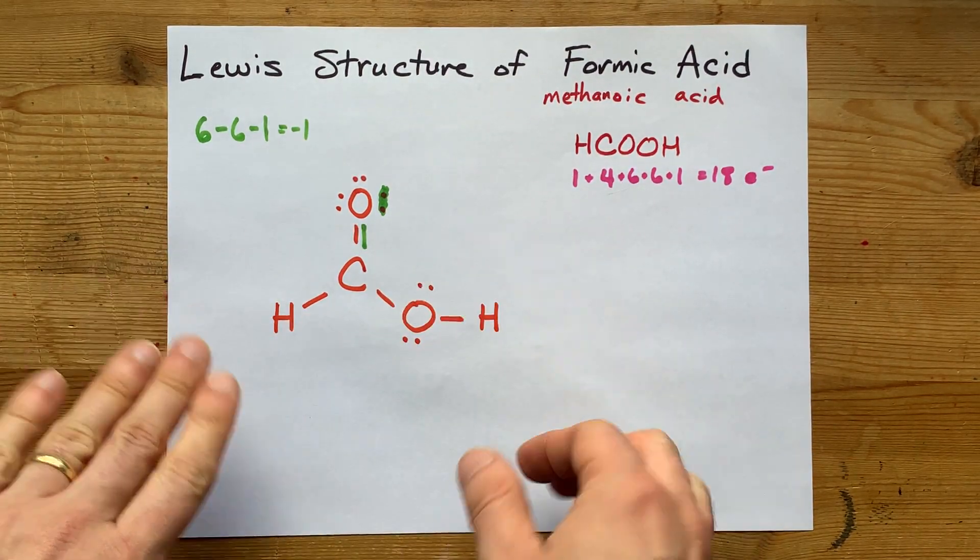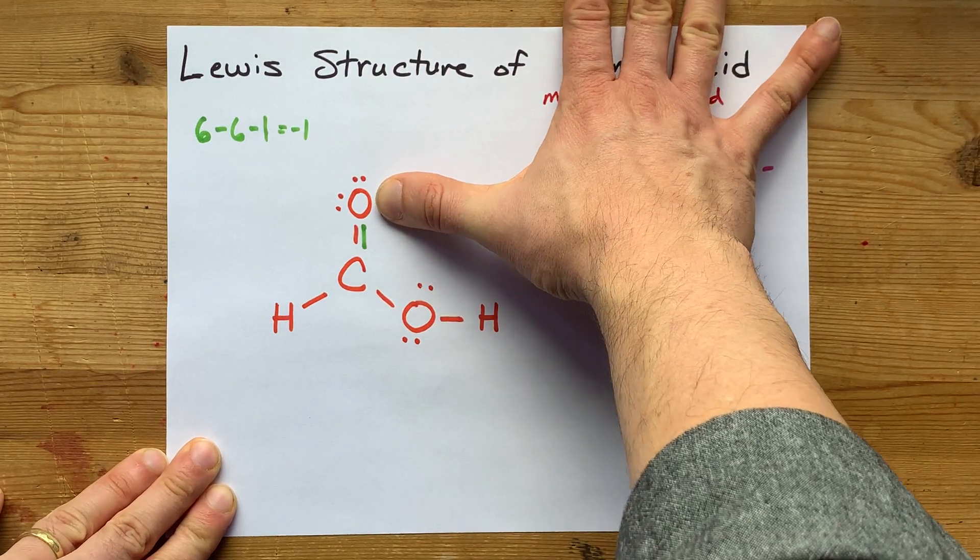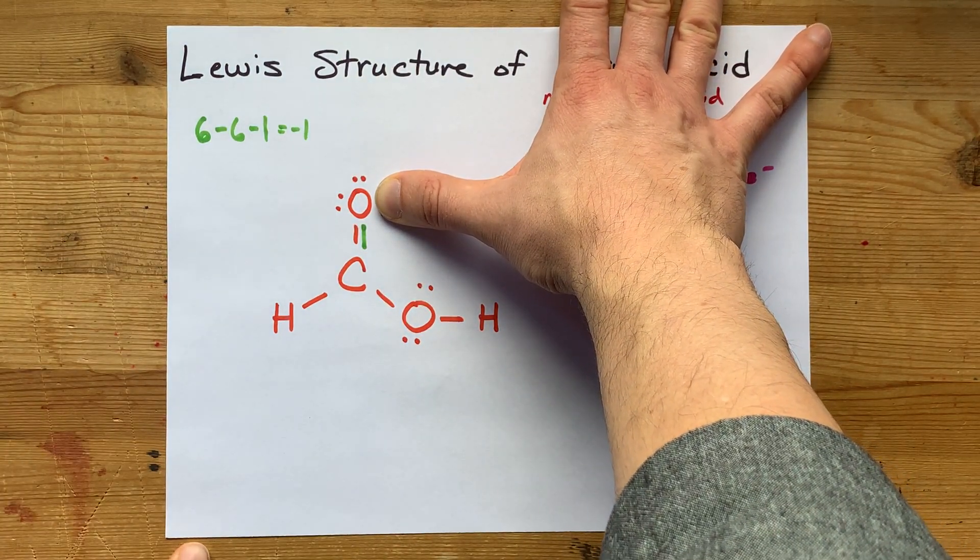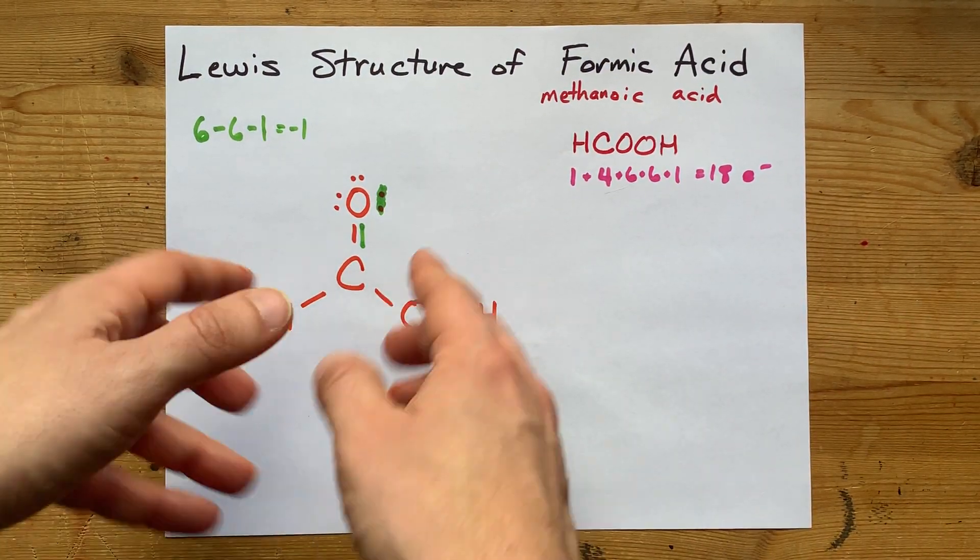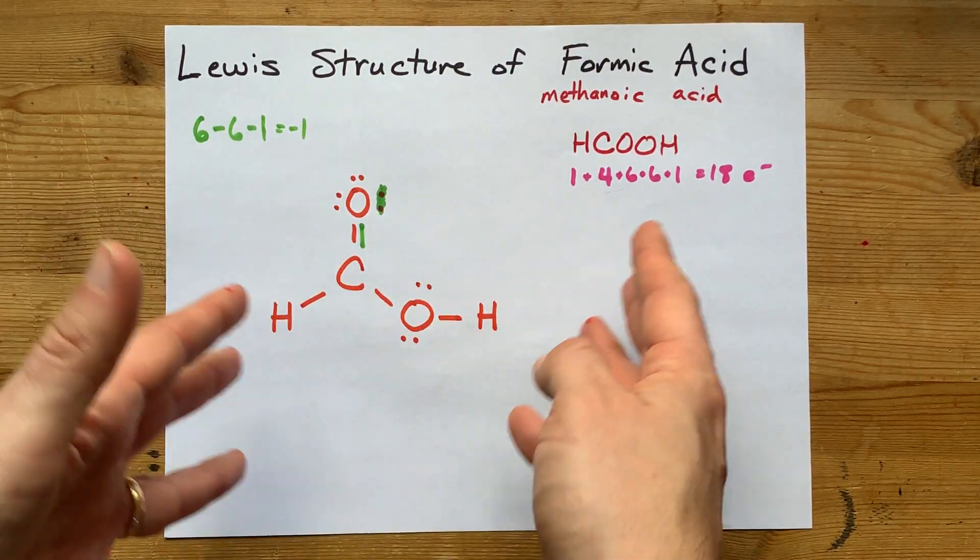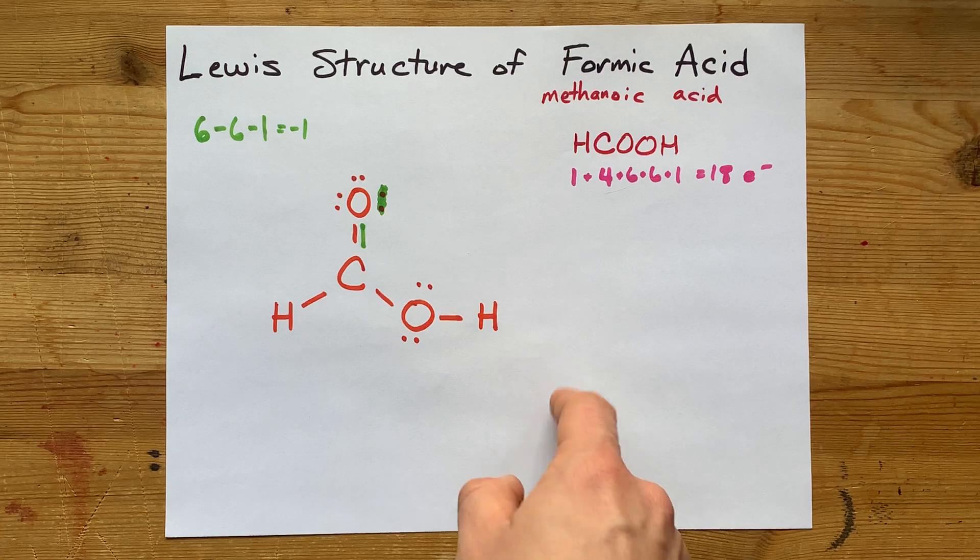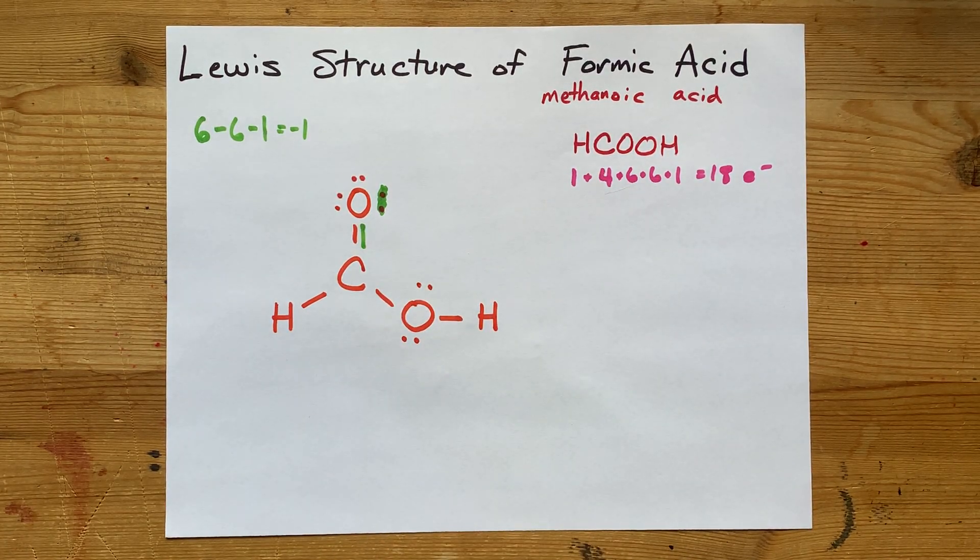This here is your complete Lewis structure. This is your complete Lewis structure for formic acid. Thanks for sticking with me through that. A little complicated, simply because it's questionable how the whole thing is structured. But you stuck with it, and I'm proud of you. Thanks for being with me, and best of luck.